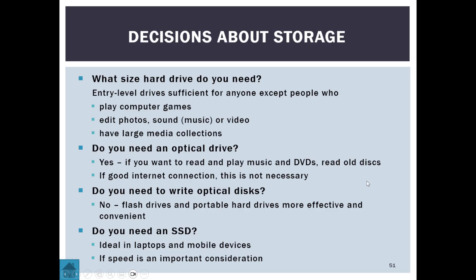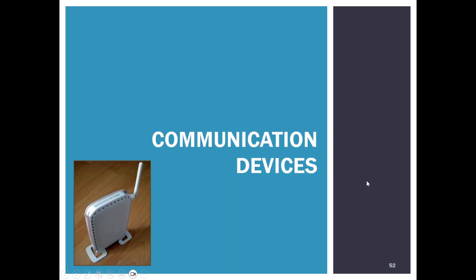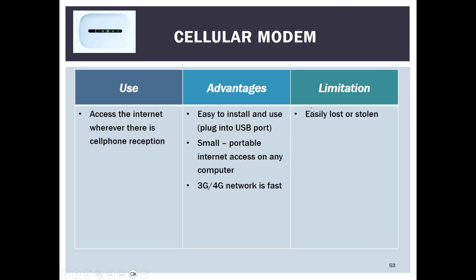Communication devices include the cellular modem, which comes in different formats — typically a small Wi-Fi router with a SIM card inside, allowing internet access wherever there's reception. It's easy to use, small, and portable. Limitations include potential loss of connection, and the device can be lost or stolen.